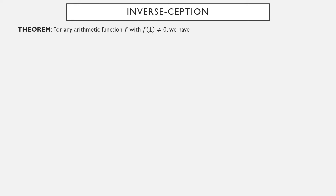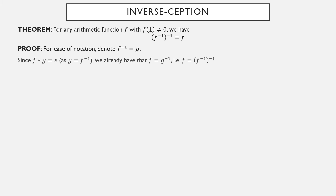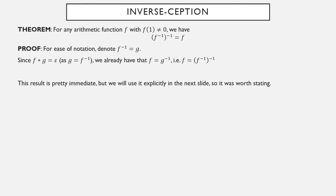This next result is somewhat obvious looking: for any arithmetic function f where f of 1 is not zero, the inverse of the inverse is the original function. For ease of notation, let g equal f inverse. The convolution of f with g is the epsilon function since they're inverses of one another. Therefore f is g inverse, because it's a function that when convolved with g gives epsilon. So f is the inverse of g, which means f is f inverse inverse. It's not a long result to prove, but we'll use it as a step shortly.